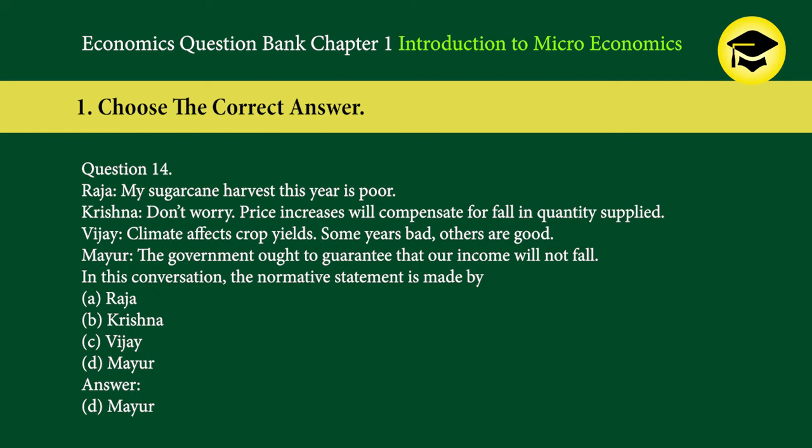Question 14: Raja says his sugarcane harvest this year is poor. Krishna says price increases will compensate for fall in quantity supplied. Vijay says climate affects crop yields — some years bad, others good. Mayur says the government ought to guarantee that their income will not fall. In this conversation, the normative statement is made by — A. Raja, B. Krishna, C. Vijay, D. Mayur. Answer: D. Mayur.